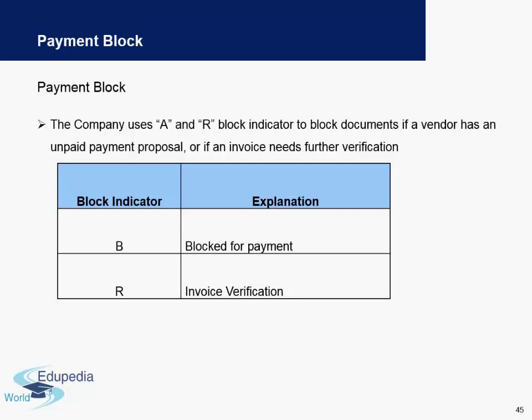We will now look into a payment block. A payment block is an indicator which blocks the documents of a vendor — specifically invoices which need to be blocked. This is used mainly if the payment does not need to be made to the vendor, for any reason. For example, the vendor is not yet due to be paid, or the invoice is not yet verified.